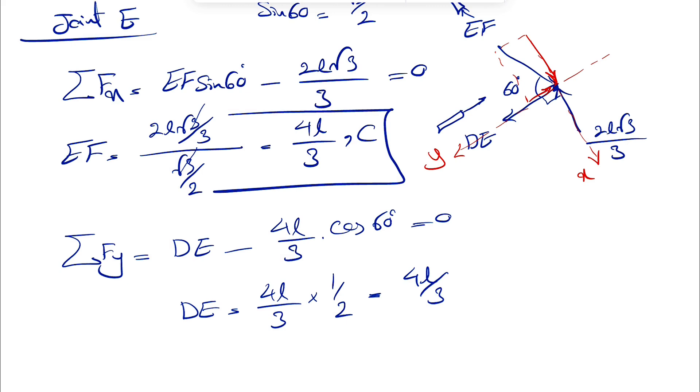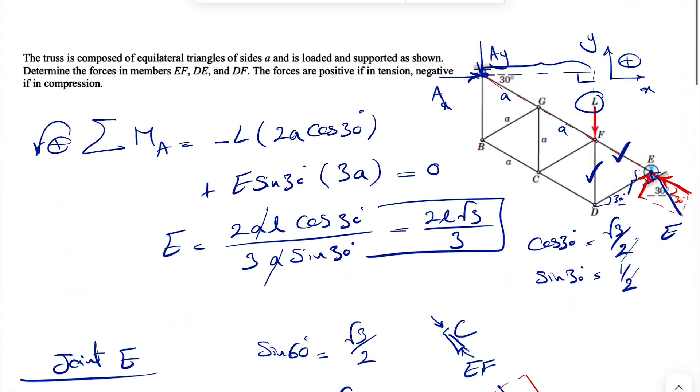And this is going to be 4L over 3. Again, no negative sign that shows that member DE in here will be in tension. So, so far we found DE. So we found EF and DE and there's only one left, which is FD.